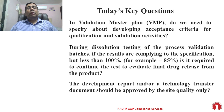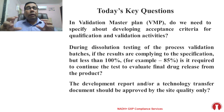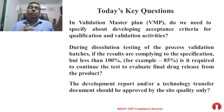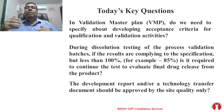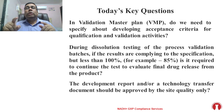Let us see the questions we are going to discuss today. Again, we have selected three questions. The first question is: in the Validation Master Plan, do we need to specify about developing the acceptance criteria for qualification and validation activities? The question is whether, in the VMP, we need to specify acceptance criteria for process validation, equipment qualification, and cleaning validation.